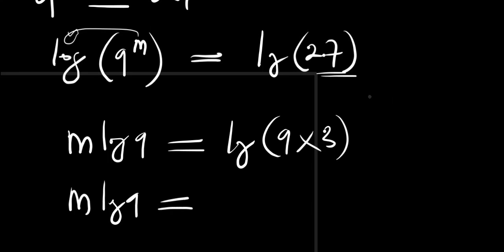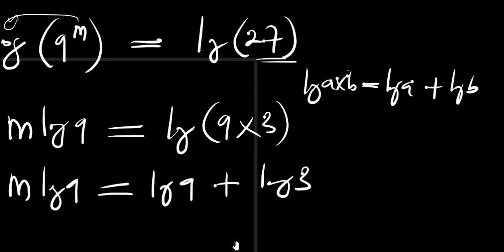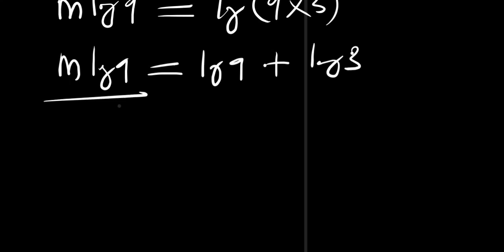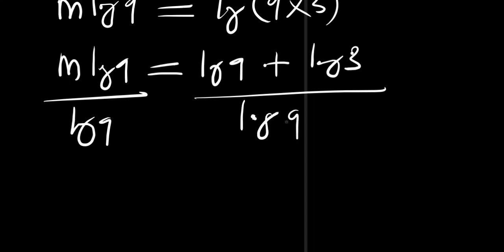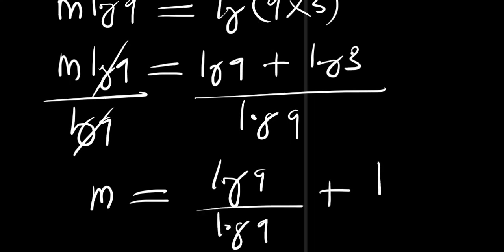There is also a property of logarithms: log of a times b equals log of a plus log of b. So log of 27 becomes log of 9 plus log of 3. Now in order to solve for m we divide everything by log of 9. Log of 9 eliminates log of 9, and we can split this as log of 9 divided by log of 9, plus log of 3 divided by log of 9.